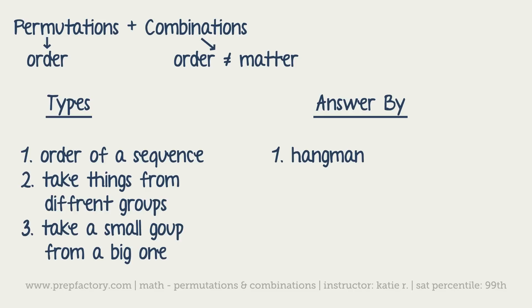To take things from different groups, you would multiply your number of options in each of the groups. And then three, you would use the formulas. The formulas are also in your calculator, so they're NPR and NCR, and you'd find them under your math function buttons.